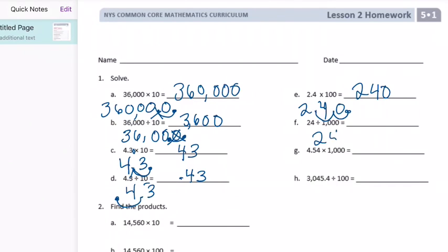24 divided by 1,000. No decimal point. I'm going to put one at the end. We're dividing, which means I'm going to be shifting my decimal point to the left. How many places? Three zeros. So I'm shifting it one, two, three places. I need to put a zero there as my placeholder, and we get 0.024.